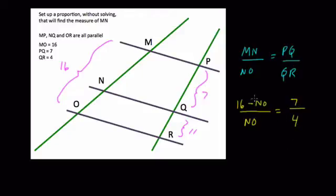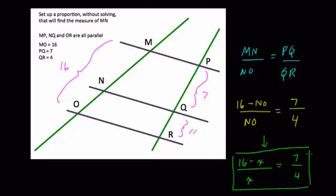And NO is just a variable. So I'm going to rewrite this one last time. It's 16 minus X over X equals 7 over 4. And we're not solving for X here, I guess because it's a quadratic. If we attempted to solve this, we'll have to deal with X squared.